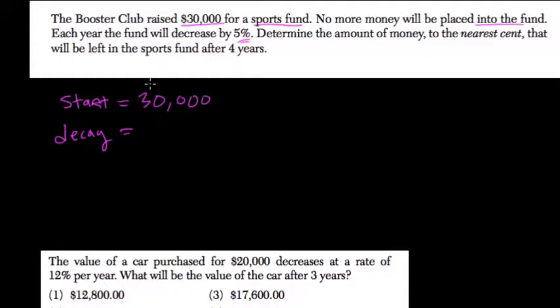So the decay is what? Well, each year we start with 100%, but we lose 5%, or 0.05. So that's 0.95. The idea being that when you lose 5% of something, what remains is 95%. So your decay factor is 95%.